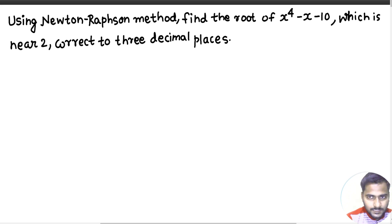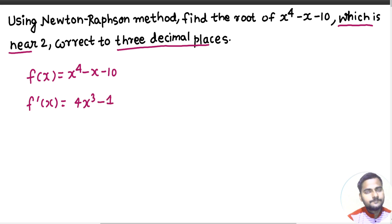Now, because it's a bi-quadratic equation, there will be 4 roots, so they have specified find that root which is near to 2, correct to 3 decimal places. So let's write the function first which is x power 4 minus x minus 10. Now because it's a Newton-Raphson method, we need derivative as well. So derivative is 4x cube minus 1.